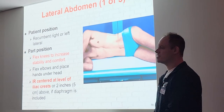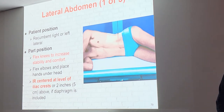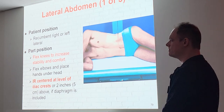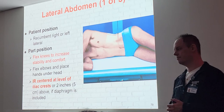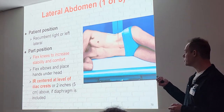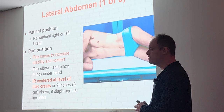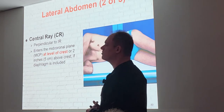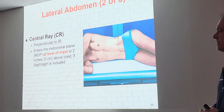To confirm: KUB and lateral abdomen are at the level of the iliac crest. All the other abdominal projections are two inches above the crest. The regular lateral is taken straight down — perpendicular — at the level of the crest, just like a regular lateral x-ray.